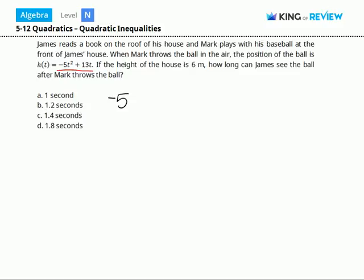We have minus 5t squared plus 13t is greater than 6. This gives us minus 5t squared plus 13t minus 6 is greater than 0.